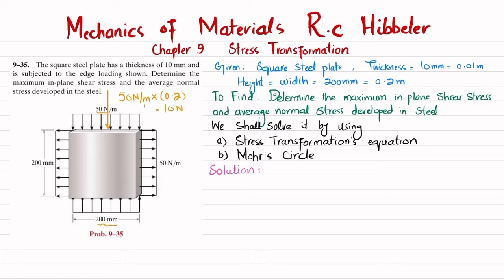This is Fy — a compressive load acting downward. The same applies on the other side: 50 Newton per meter into 0.2 meters gives you 10 Newton. The load in the x-direction is Fx.